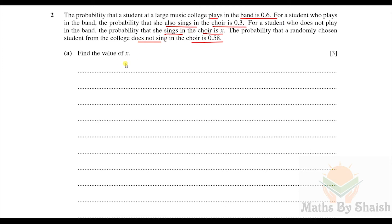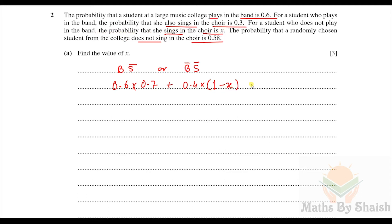A student does not sing via two paths: in the band and not singing, or not in the band and not singing. So: P(not singing) = P(band) × P(not singing | band) + P(not band) × P(not singing | not band) = 0.6 × (1 − 0.3) + 0.4 × (1 − x) = 0.58.